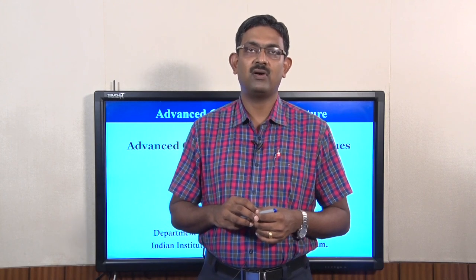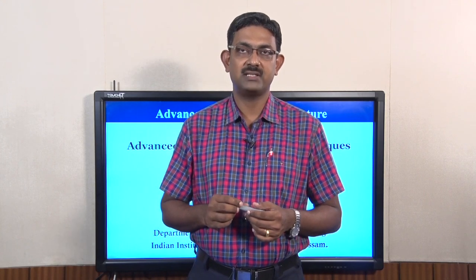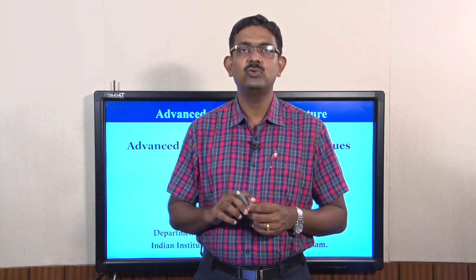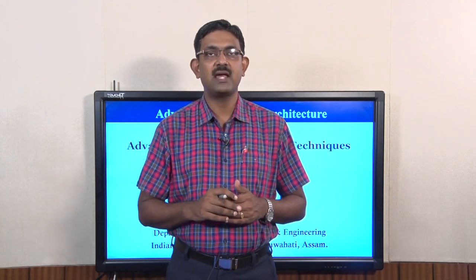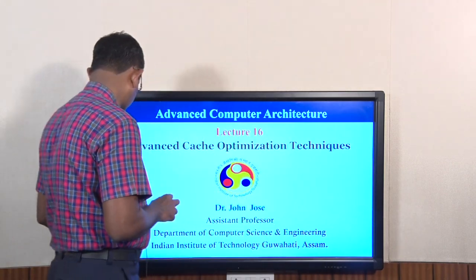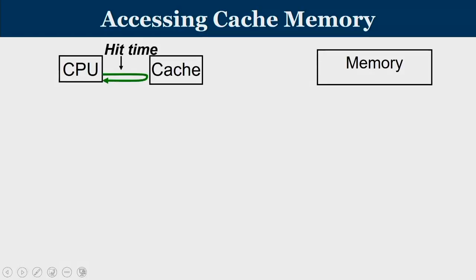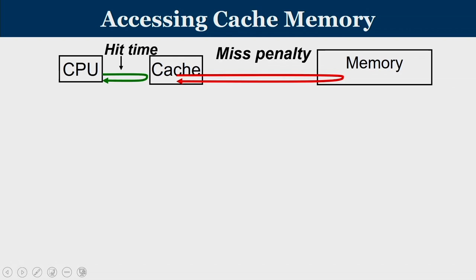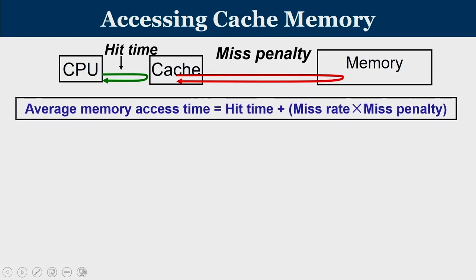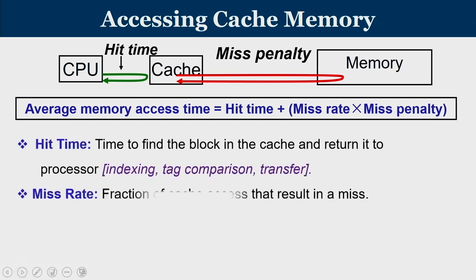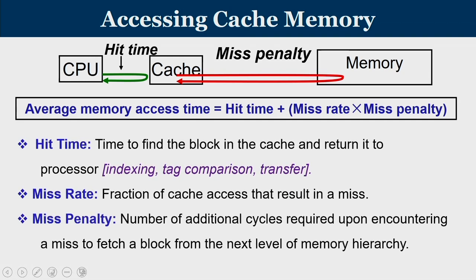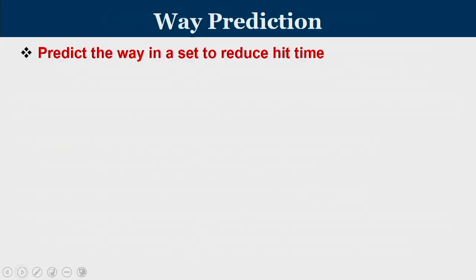A quick recap of advanced cache optimization — let me introduce what average memory access time in caches means. Hit time and miss penalty are two important times that govern average memory access time, with miss rate also coming into picture. Hit time is the time to find the block in the cache and return it to the processor, miss rate is the fraction of cache accesses that result in a miss, and miss penalty is the number of additional cycles required upon encountering a miss to fetch a block from the next level in the memory hierarchy.